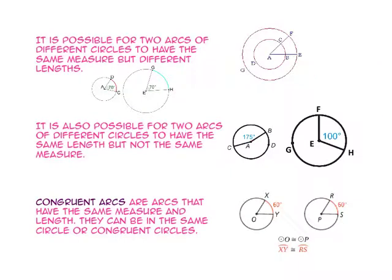It is possible for two arcs of different circles to have the same measure but different lengths. The measure of arc DC is 70 degrees and the measure of arc GH is 70 degrees, but notice that the length of arc GH is longer than the length of arc DC.